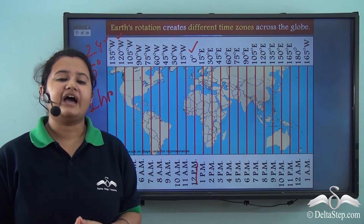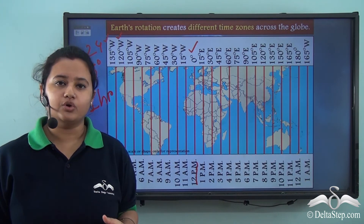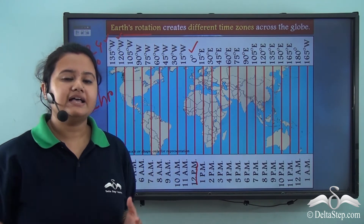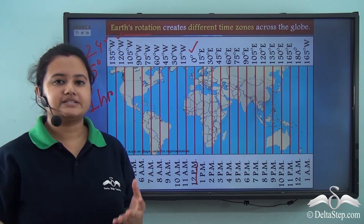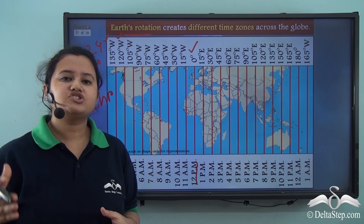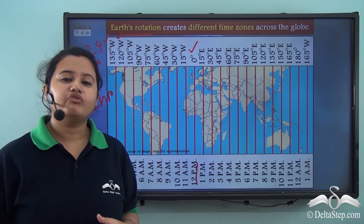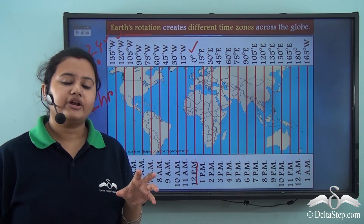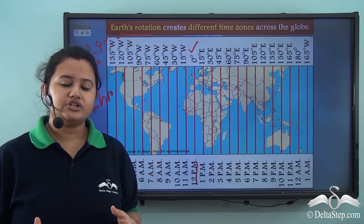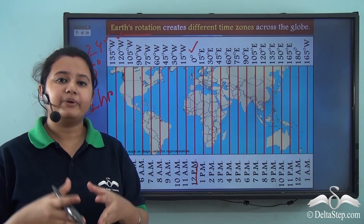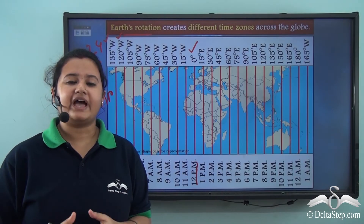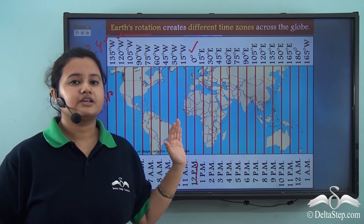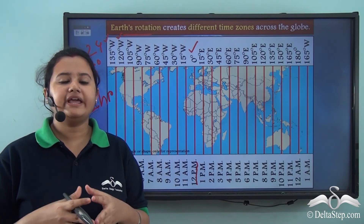We have different time zones across the globe because of the earth's rotation. As the earth rotates on its axis from west to east, each longitude faces the overhead sun at different points of the day. When the sun is overhead over a particular longitude, that longitude will have 12 pm or midday. So we have different time zones across the world because of the earth's rotation.